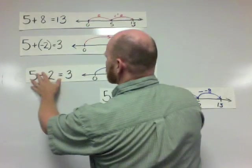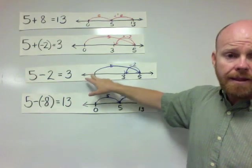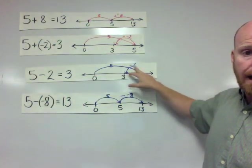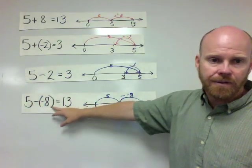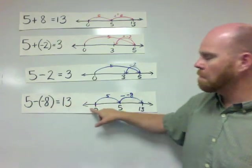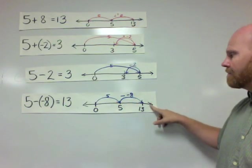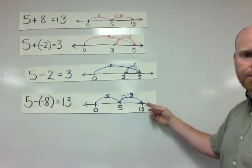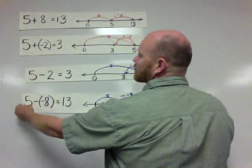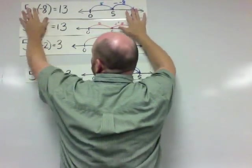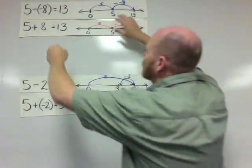We also did some subtraction with number lines. We've got 5 minus 2 equals 3, modeled by a hop to the right and a hop to the left, giving us 3. And down here we've got 5 minus negative 8 equals 13, modeled by a hop to the right of 5 and then 8 units to the right for subtracting negative 8. We can see some similarities — these two numerical expressions go together, and these two numerical expressions go together.